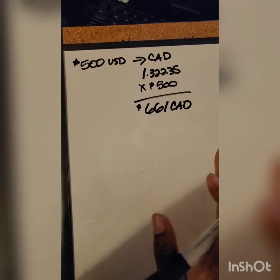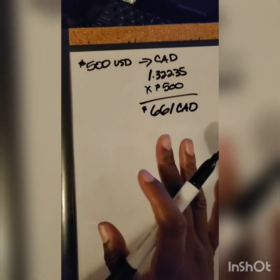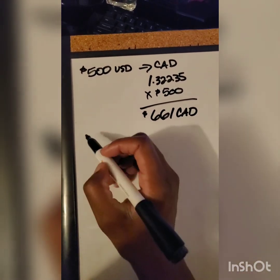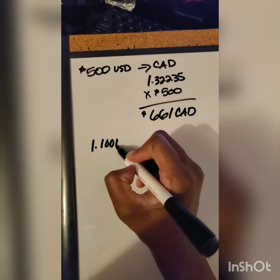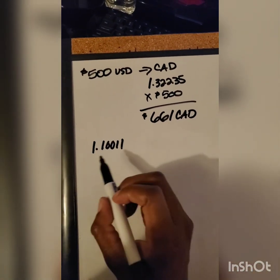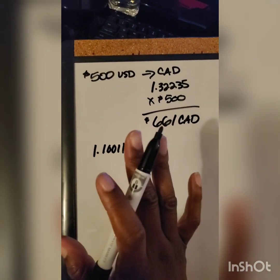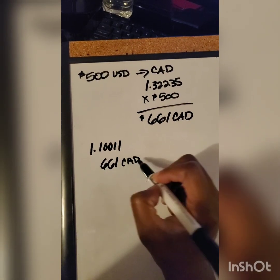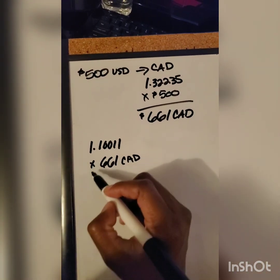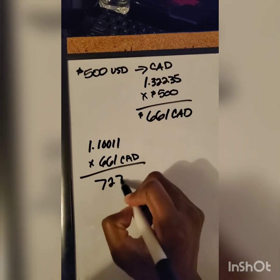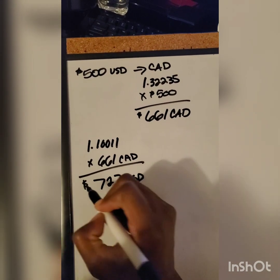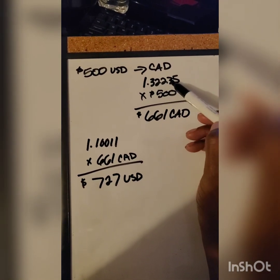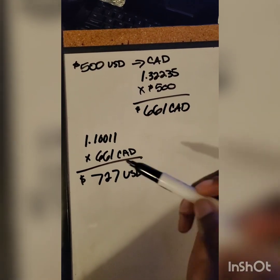Not bad, right? Let's say we've had our fun — it's been about a month and it's time to go home. Since we've been in Canada, the value of the Canadian dollar has changed. Now it's 1.10011. This number is smaller than the original rate. We'll convert our $661 Canadian dollars back into U.S. dollars — just simple multiplication — and now we have $727 U.S. dollars. The Canadian dollar went down in value from $1.32235 to $1.10011, and that's a good thing for us.